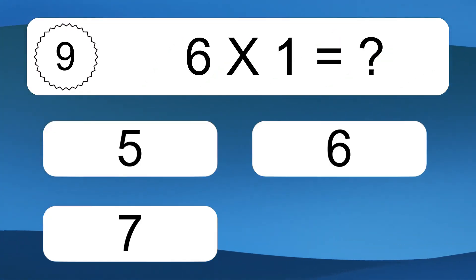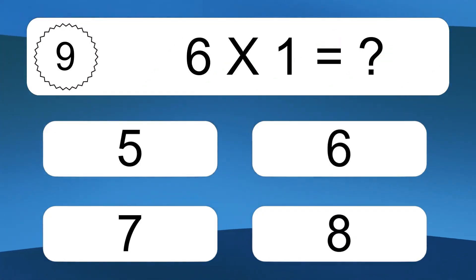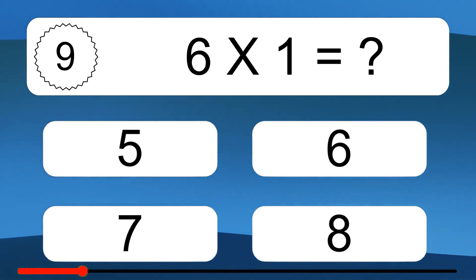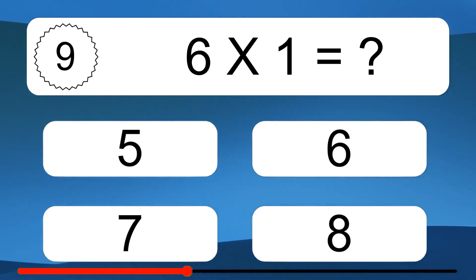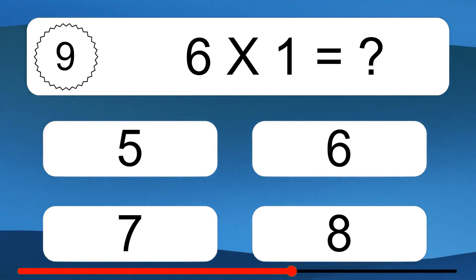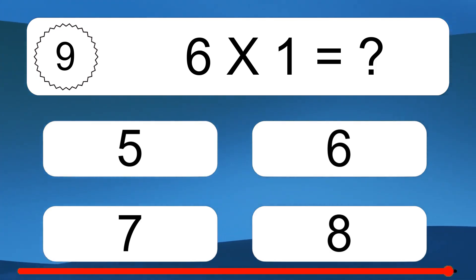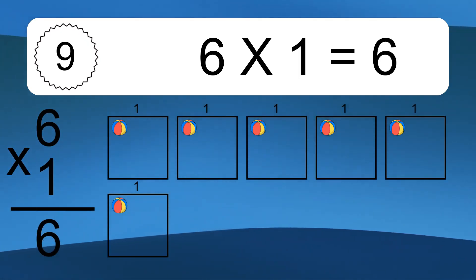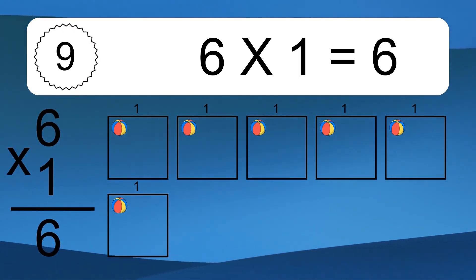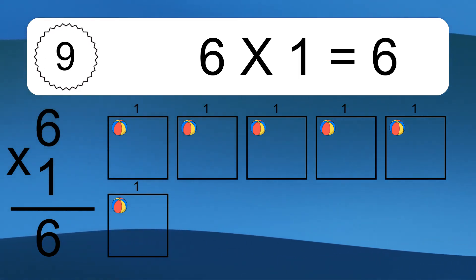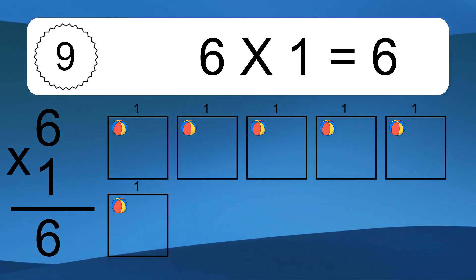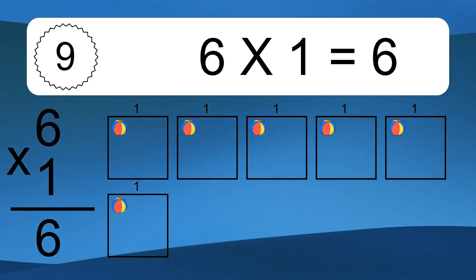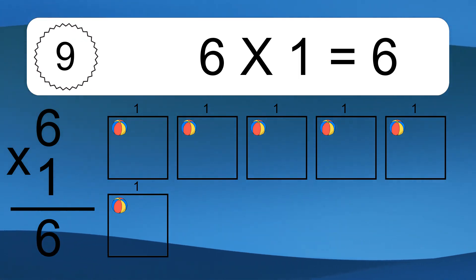6 times 1 equals what? 6 times 1 equals 6. We have 6 boxes, and each box has 1 colorful ball inside. If you count all the balls in all the boxes together, you will have 6 times 1 balls. This equals 6 balls.